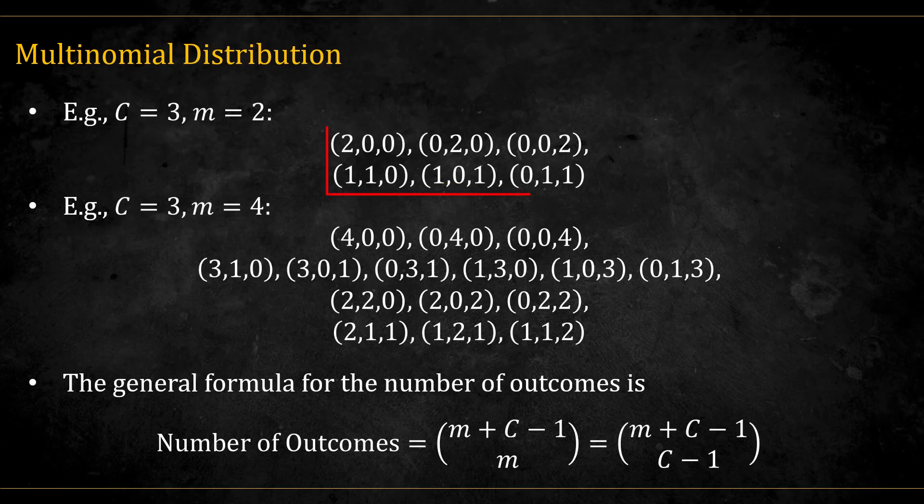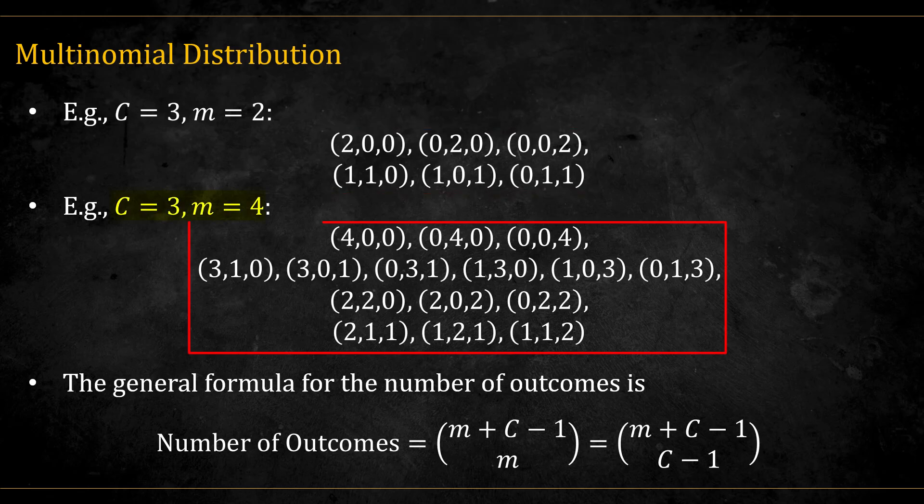For example, here are the different multinomial results when we have three classes and two repeated experiments. We have six different ones in total. When we have four repeated experiments, we have 15 in total. Notice how the sum across y's must be equal to m. The general formula for the number of outcomes is given here.